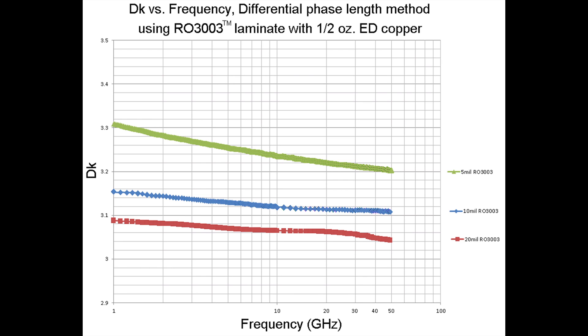Another trend to consider is that the thicker the material, the circuits approach a lower and lower dielectric constant, approaching the intrinsic value of the dielectric constant — in this case, 3.0 for the RO3003 laminate. That's what happens when the copper planes are far enough apart that the phase velocity is not affected by copper roughness, and what you're really testing is the intrinsic value of the material. If we extended this chart to thicker materials like 60 mil RO3003, the dielectric constant curve would settle in around 3.0, the intrinsic or bulk Dk value.